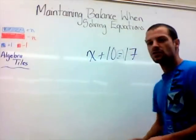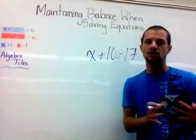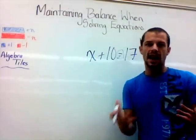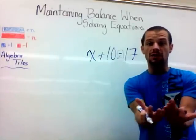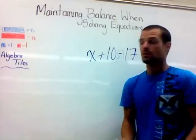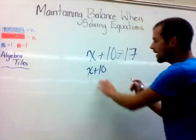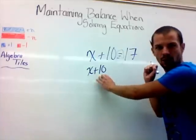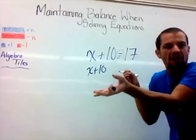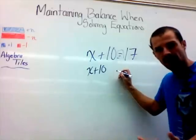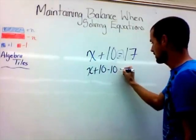The way you do that is by creating zero pairs. If you think to integers — positives and negatives — when you have a positive number and a negative number and you put them together, you have 0. So here we have x plus 10. We want to get rid of this 10. We can't just take it out — we can't just go 'yoink.' We have to mathematically get rid of it by creating zero pairs.